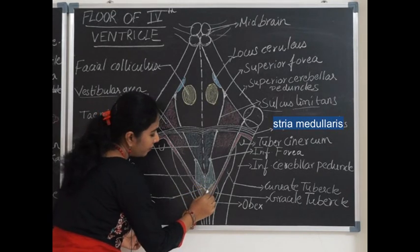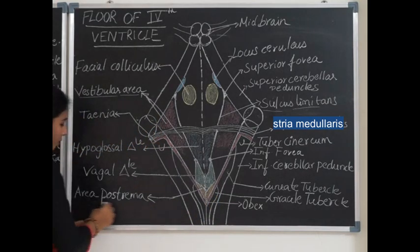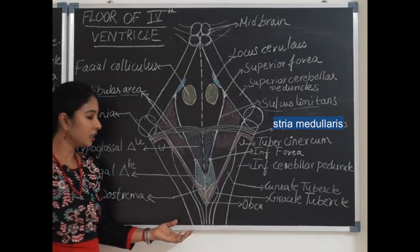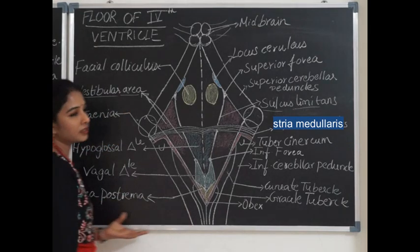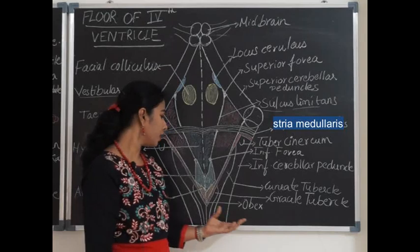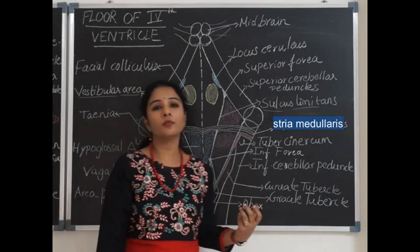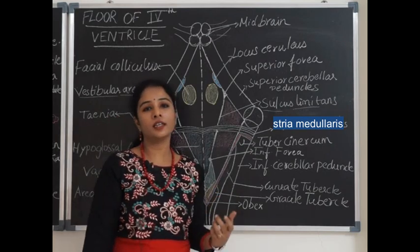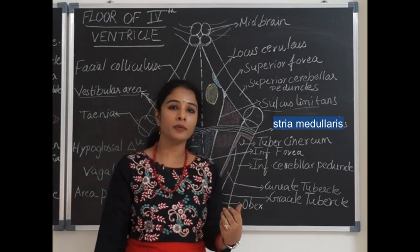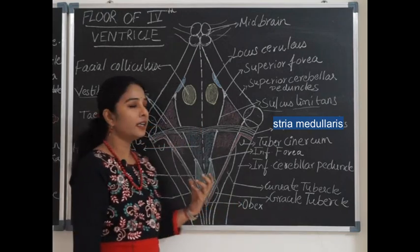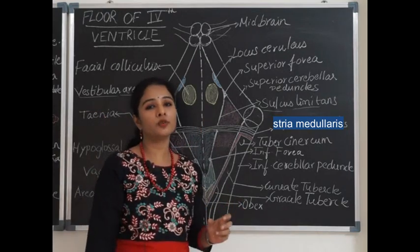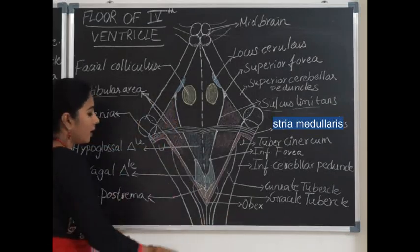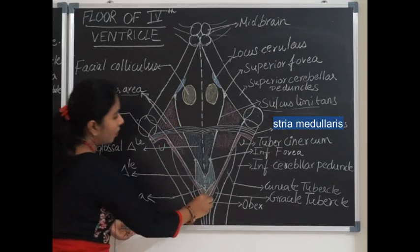Near the lower tip of the fourth ventricle, the vagal triangle is separated from an area called the area postrema by a thin fiber-like structure called the funiculus separans. The area postrema is considered the vomiting center because it contains chemoreceptor trigger zone receptors. It is a neuroglial tissue that is highly vascular with no blood-brain barrier, and any stimulation to these receptors will cause vomiting.